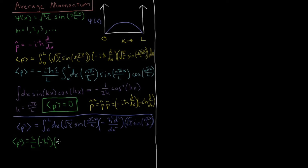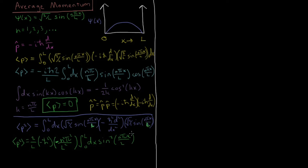That gives us a minus sign and a factor of n-squared pi-squared over L-squared. The integral then reduces down to the integral from 0 to L of sine-squared(n pi x / L) dx. So the integral we need to evaluate is of the form integral of sine-squared(kx) dx.